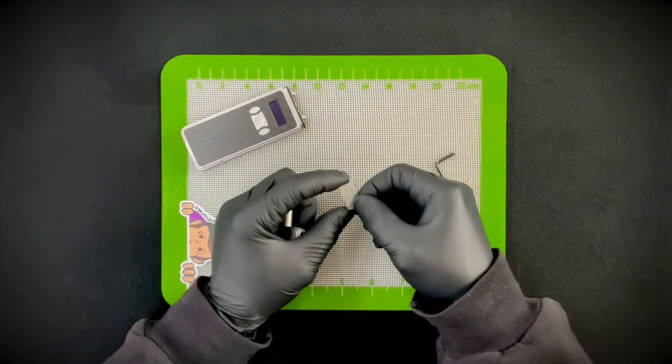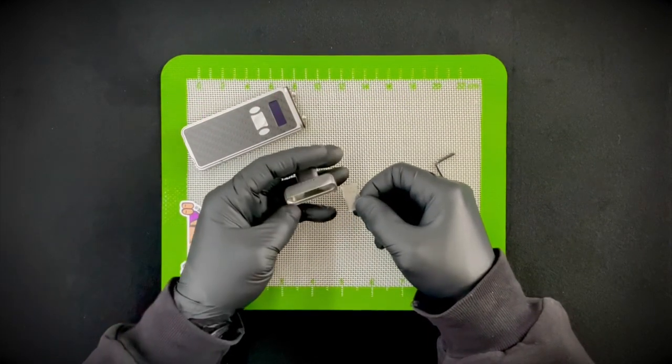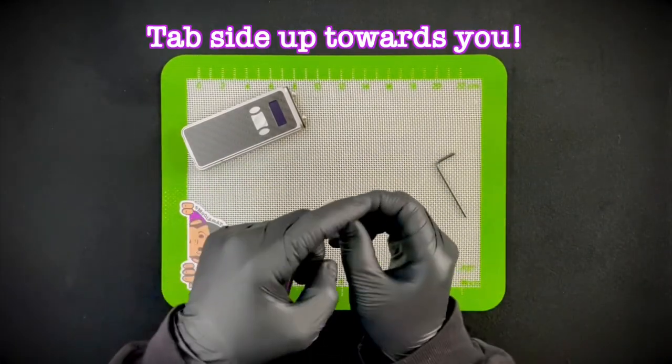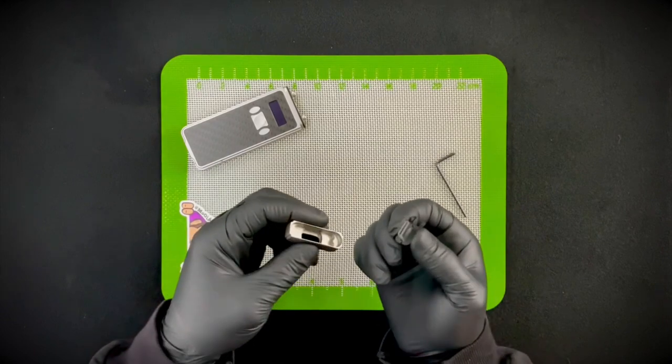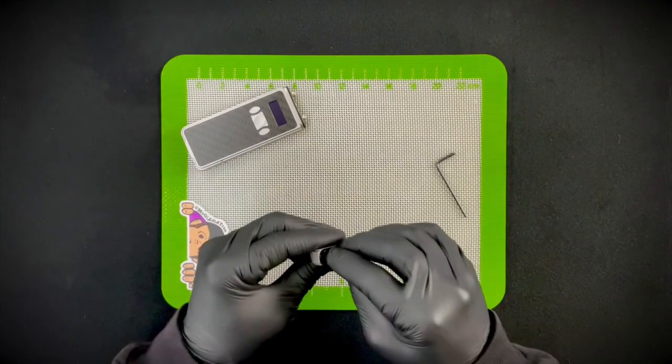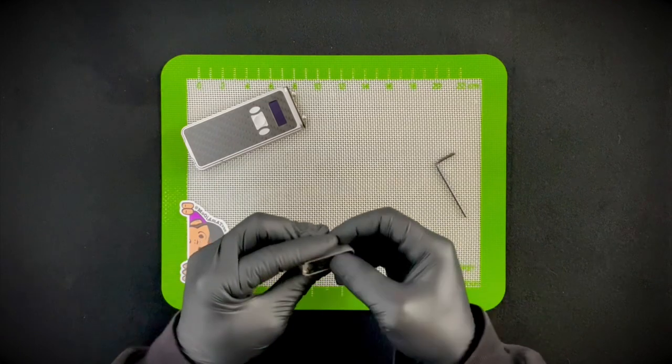But if you treat the Cricket like it wants to be treated, you really shouldn't run into that problem too much. So to get this glass chimney back in there, you're gonna do tab side up towards you, and I put the silicone on like this and slide the whole thing down into the lid like that.